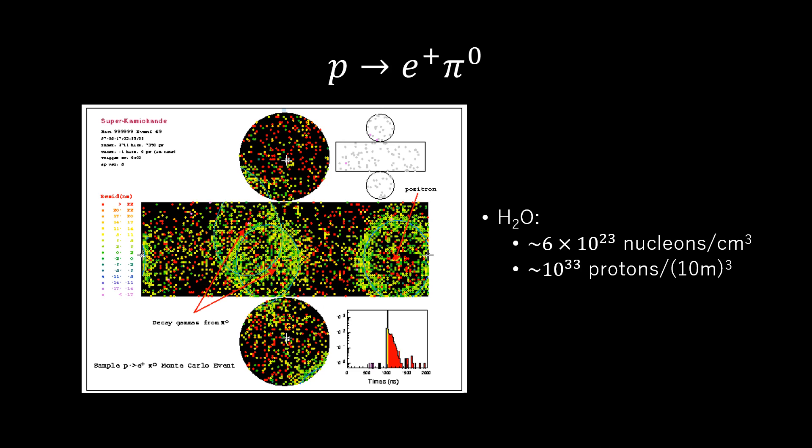To look for proton decay, it is necessary to get together a large number of protons and carefully observe them. One cubic centimeter of H2O contains about 6 × 10^23 nucleons, so a cube 10 meters on a side contains almost 10^33 protons.